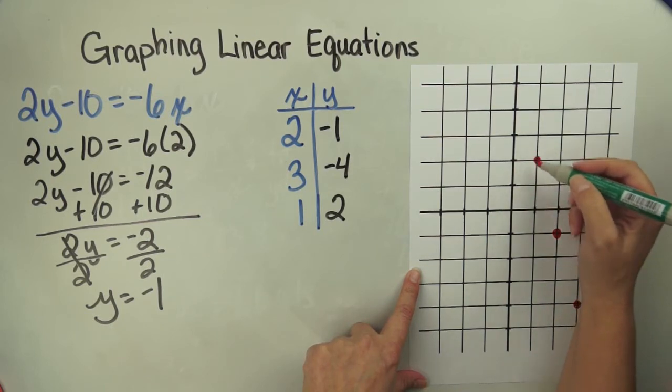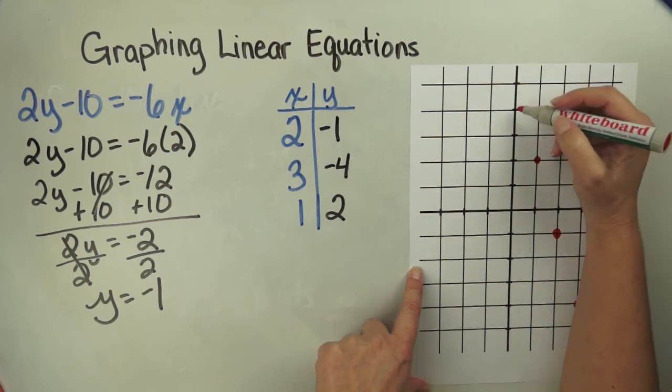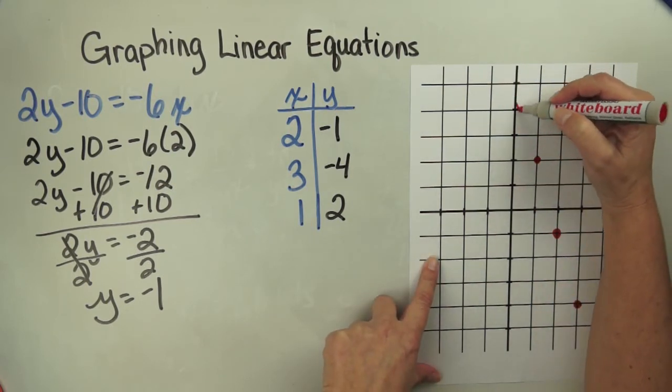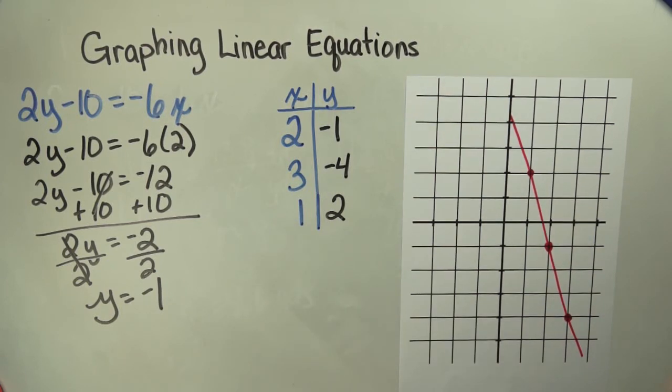And now I have 3 points that I can make a straight line through. I don't have a straight edge with me, so I will do my best to make that line straight. And that's the end of this lesson on graphing linear equations.